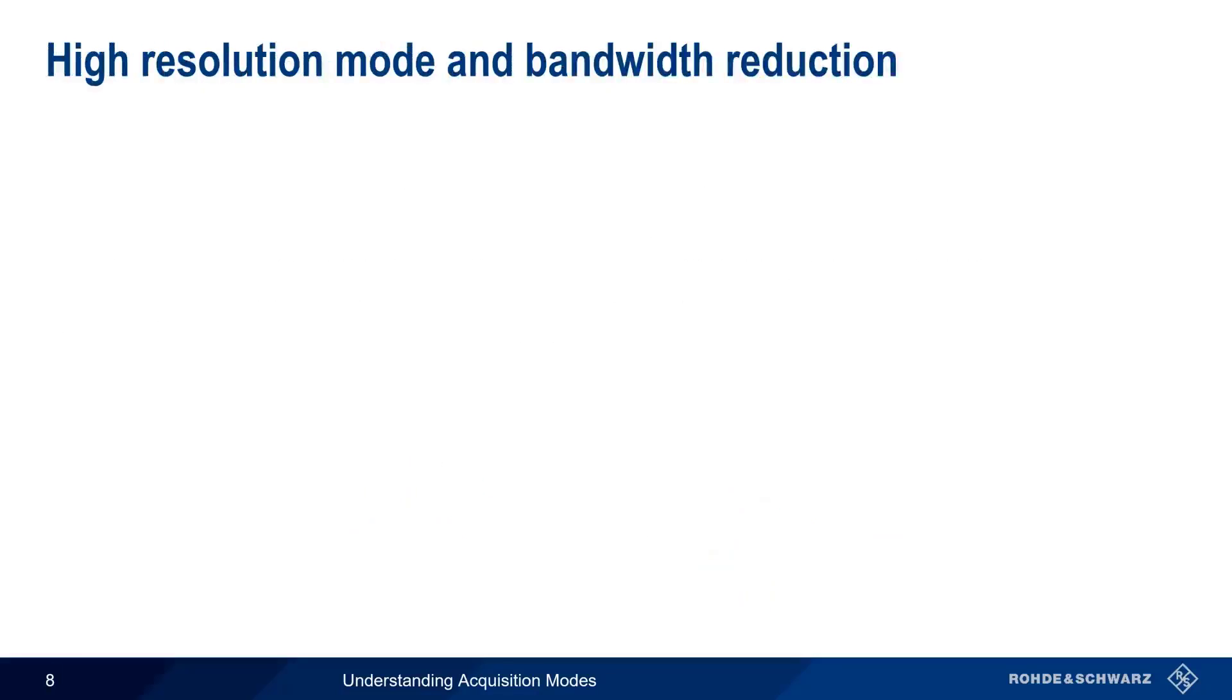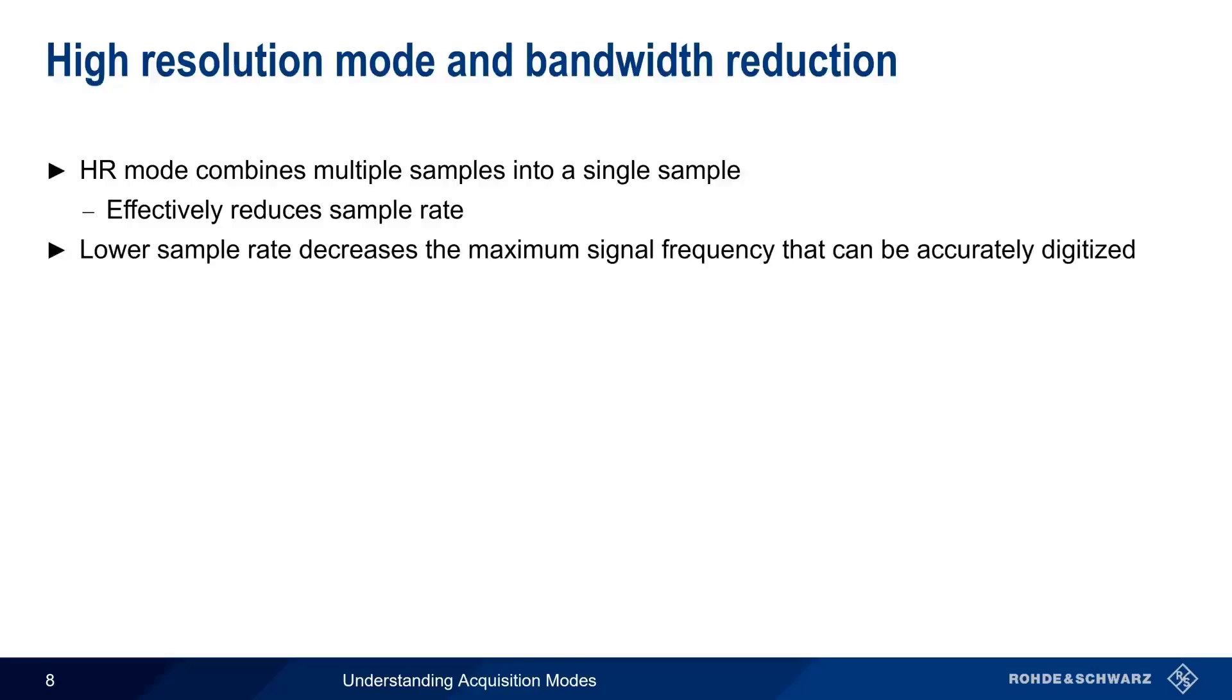There is, however, one thing to keep in mind when using high-resolution mode. Because high-resolution mode combines multiple samples into a single sample, it effectively reduces the sample rate. This lower sample rate then decreases the maximum signal frequency that can be accurately digitized.